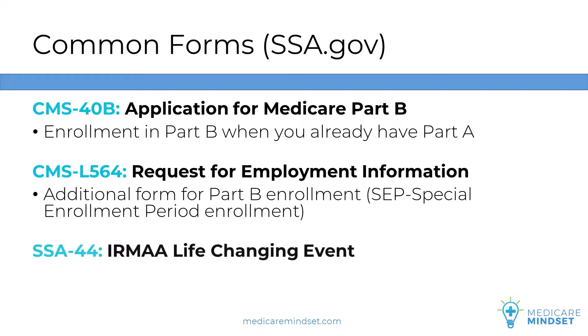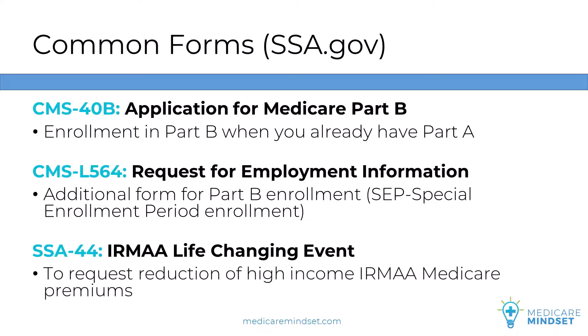Form SSA-44 is the Income Related Monthly Adjustment Amount Life-Changing Event form. This is the form to request a reduction of your high-income IRMAA Medicare premiums when you have a life-changing event that reduces your income. We will also link to our video on how to appeal IRMAA in the description below.